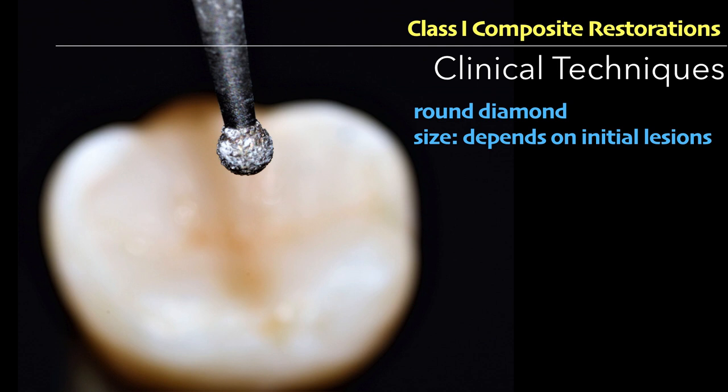Which bur should we use to make a cavity? It's a round bur — it can be a diamond or a carbide depending on preference. My recommendation for beginners is to use a round diamond because it is easier to control and easier to grip. With carbides, you can grind tooth structure very quickly, so get some training with carbide before using it in cavity preparations. A round diamond is a good bur to start with.